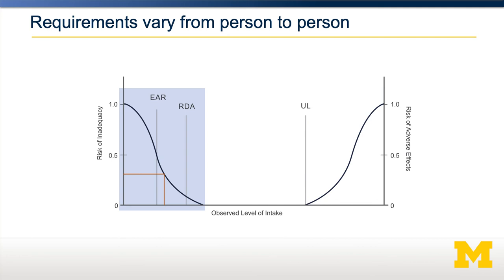Individual requirements for a given nutrient vary from person to person. Currently, we look at population-level averages. Looking at this graph, the blue portion shows the relationship between risk of inadequacy for a particular nutrient relative to its level of intake. As intake increases, risk of inadequacy decreases. With absolutely no intake, you are at 100% risk of inadequacy. At a particular intake level, about 30% of people are at risk of inadequacy — not any specific individual, but about 30% of the population. One of the goals of nutrition going forward is to develop more precise estimates for individuals based on their genetics, life stage, sex, and other factors.